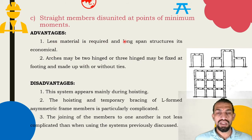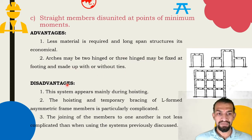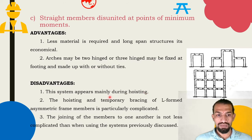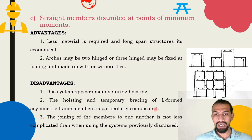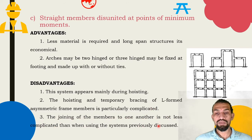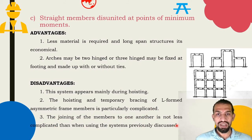Advantages of Method 3: less material is required, and it is economical for long-span structures. Arches may be two-hinged or three-hinged, may be fixed at footing, and constructed with or without ties. Disadvantages: complications appear mainly during hoisting — hosting and temporary bracing of L-shaped asymmetric frame members is particularly complicated. The joining of the members to one another is no less complicated than in the previously discussed systems.